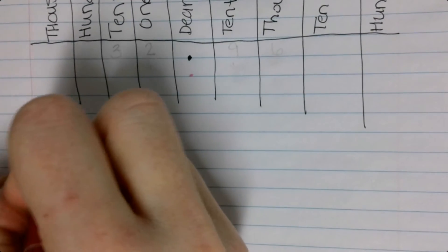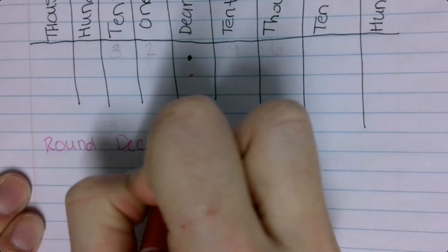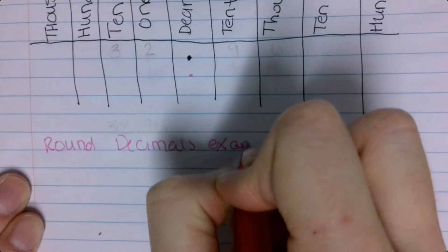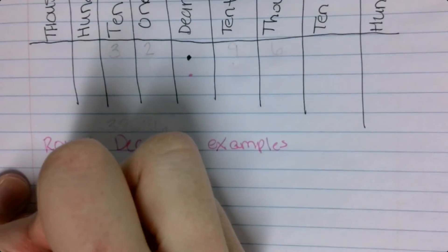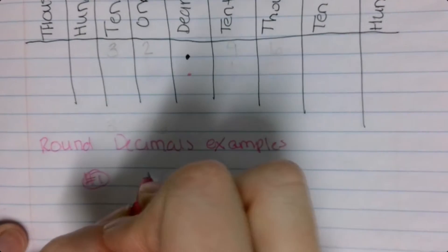So let's do some rounding. We are going to be doing rounding decimals examples. Alright. So number one, I want you to round. We'll do the first one.